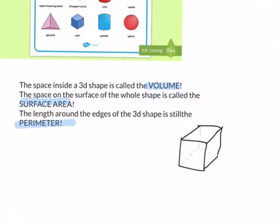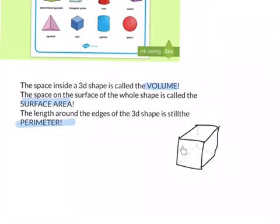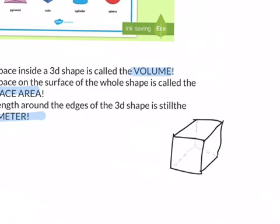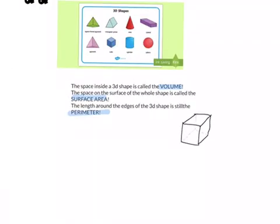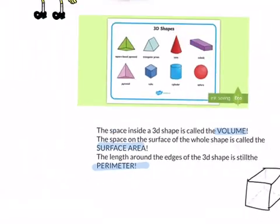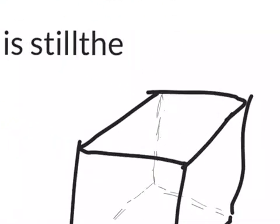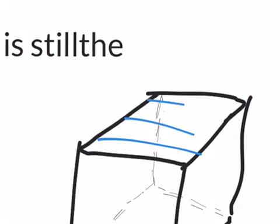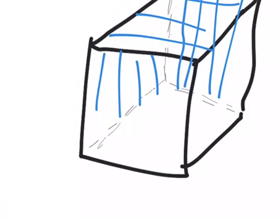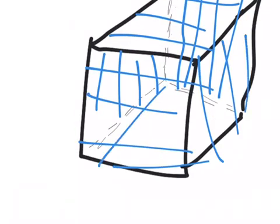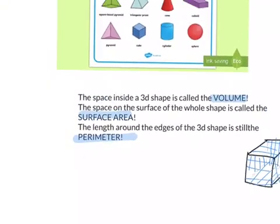So basically, here you have a 3D shape, I tried to draw it here, and the volume, it's basically the space inside here. So basically, everything, everything that's inside this, it's not like area, because this time it's a 3D shape, not 2D. Like, but space on the surface, so basically everything that is on the surface, not what's inside, but just on the surface, that is called the surface area, as the name implies.